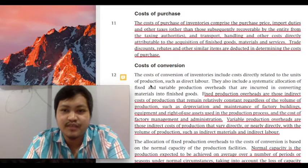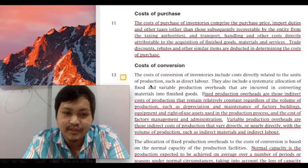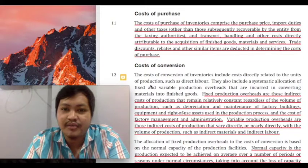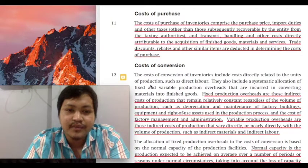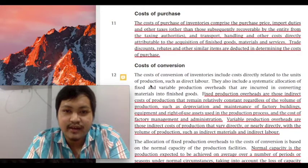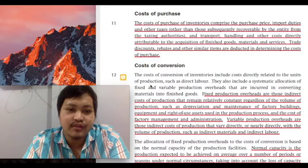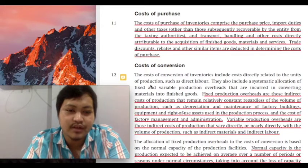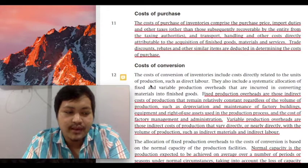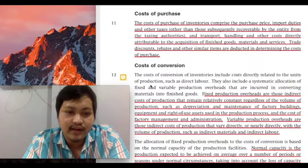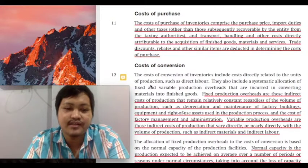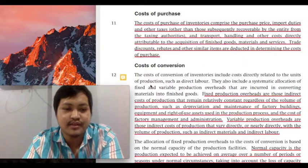Another example of inventoriable costs would be transport — the cost to bring the asset to its present location — handling, and other costs directly attributable to the acquisition of goods, materials, and services. A very important phrase here is 'directly attributable costs.' Directly attributable costs can be understood in the same way as the necessary costs explained earlier. For you to easily remember that, we call it DAC — D-A-C, Delta Alpha Charlie — which stands for Directly Attributable Costs. It should form part of the cost of your inventories because they are considered necessary costs to bring the inventory to its present location and condition.